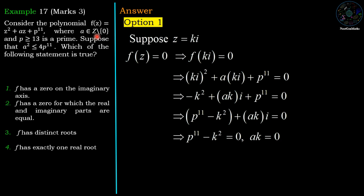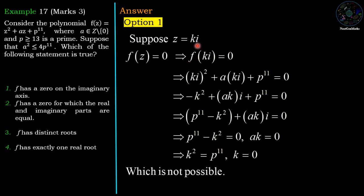Since a is non-zero (a ∈ ℤ \ {0}), we get k = 0. But then k² = 0, contradicting p¹¹ − k² = 0 since p ≥ 13 is non-zero. Both conditions cannot hold simultaneously, so z = ki cannot be a zero of f. Therefore option 1 is wrong.